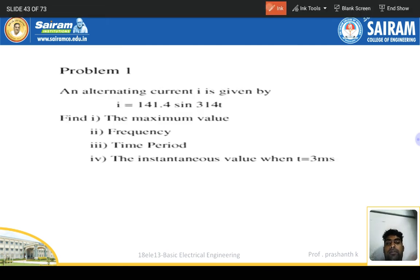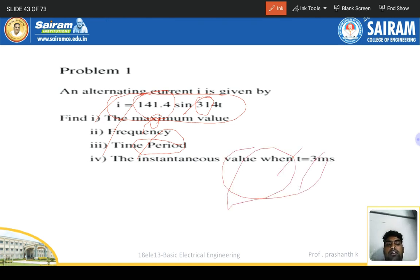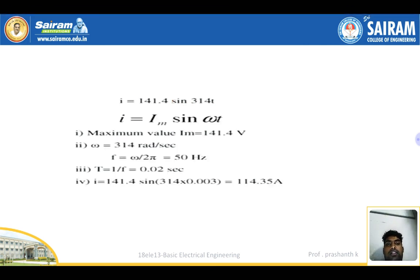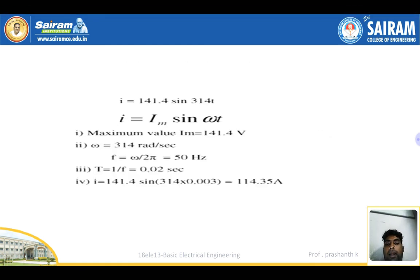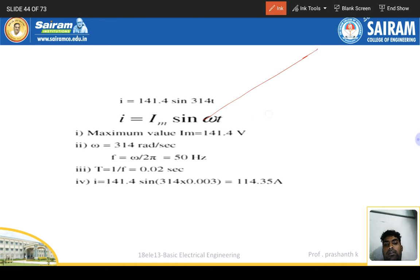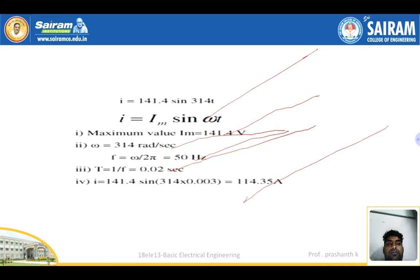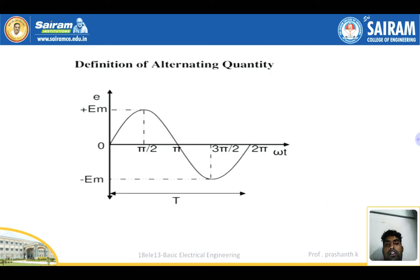Problem: Given I = I_m sin(ωt), where I_m = 141.4 A and ω = 314 rad/s. Calculate frequency: ω = 2πf, so f = 50 Hz. Time period T = 1/50 = 0.02 seconds. Find the instantaneous value at t = 3 milliseconds: substitute t = 3×10⁻³ into the equation to get the result.